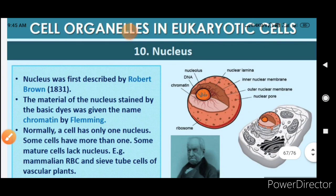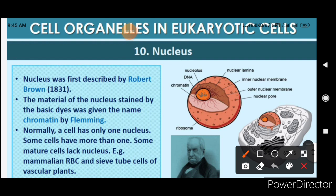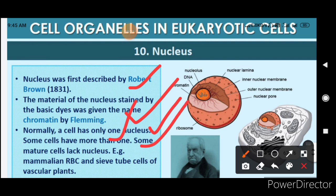Now we come to the nucleus. The nucleus was first described by Robert Brown in 1831. The material of the nucleus stained by basic dyes was given the name chromatin by Fleming. Normally a cell has only one nucleus, but some cells have more than one, and some mature cells lack a nucleus — for example, mammalian RBCs and sieve tube cells of vascular plants.